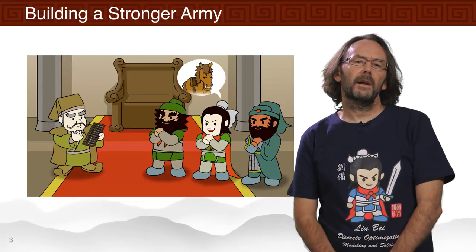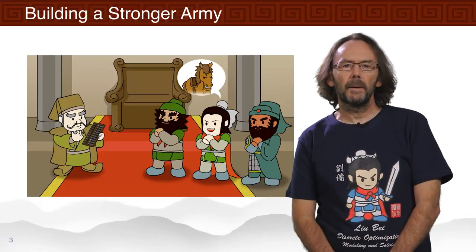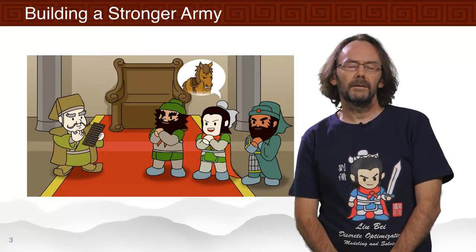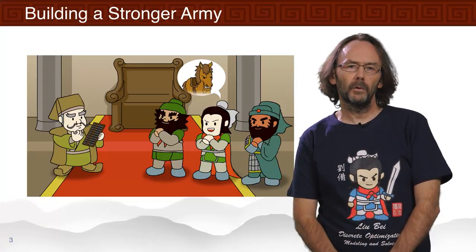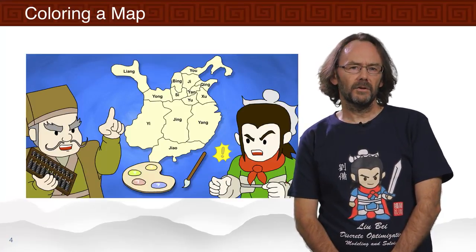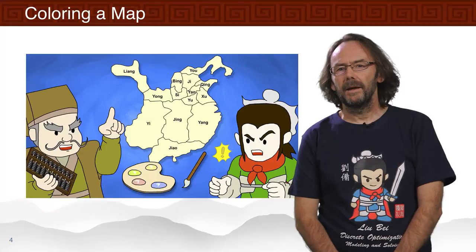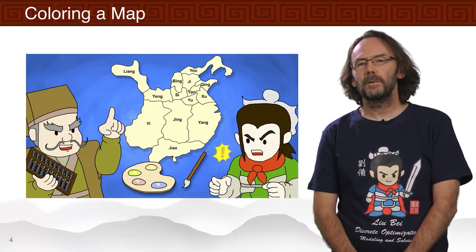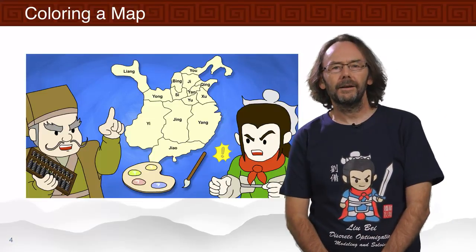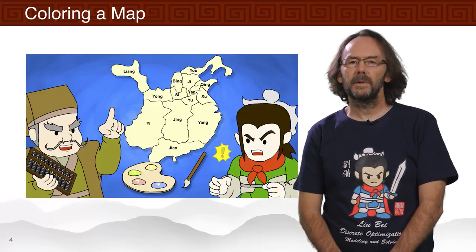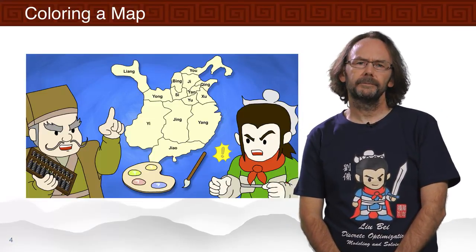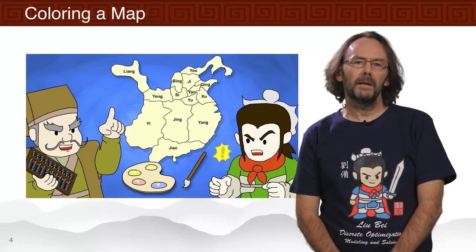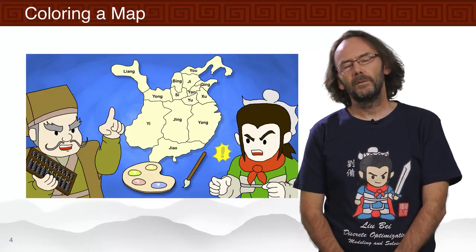Our three heroes are interested in building a stronger army, so they go to visit Zheng Shuping to see if he'll sponsor them for horses. Zheng Shuping is a wise man and sets them a challenge first — to show their capabilities to defeat the Yellow Turban rebels. He gives them a map of the Han dynasty and says: four-colour this map.